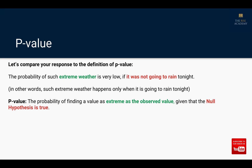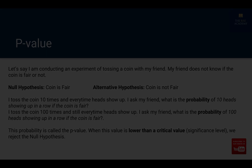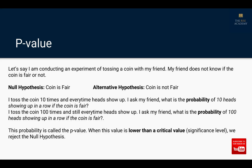So, assuming it was not going to rain tonight, the probability of this kind of extreme weather is very low. In other words, such extreme weather happens only when it is going to rain — only then would you see grey clouds, lightning, and a cool breeze. That's how you can relate a day-to-day situation with the definition of p-value.